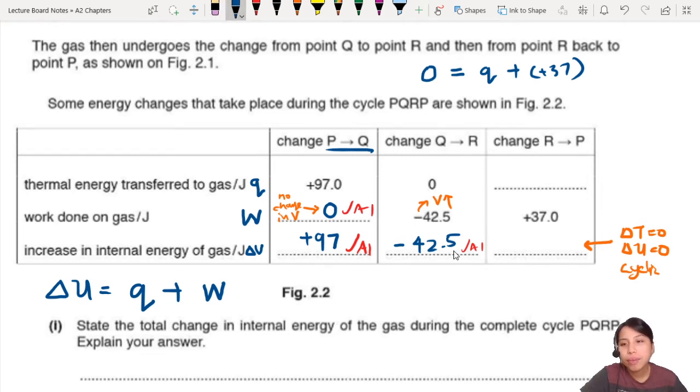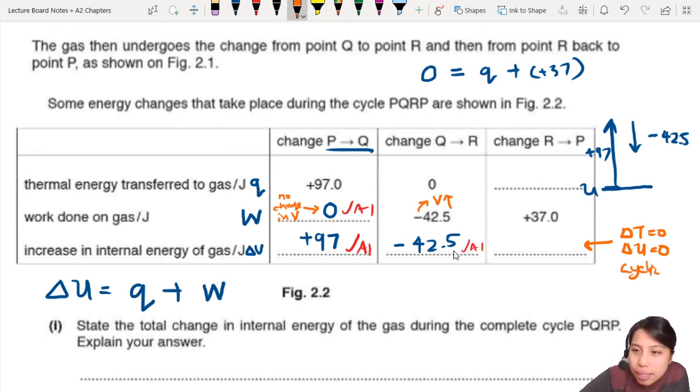So from the beginning, let me label this out again. You start off at a certain value of U. You increase by 97. Then your internal energy decrease by 42.5. So minus 42.5. So in the last part, I should get back to my original U. Because cyclic, from beginning to end, it should be that. So taking that into account, hence, this last part should decrease by a certain amount, which is, you take 97 and do some maths there. Should be 54.5.